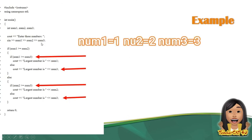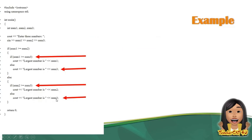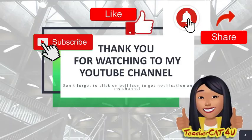Num1 is 1, num2 is 2, num3 is 3. Is 1 greater than 2? False. Is 2 greater than 3? False. Ibig sabihin, ang largest number is 3. Thank you for watching to my YouTube channel.